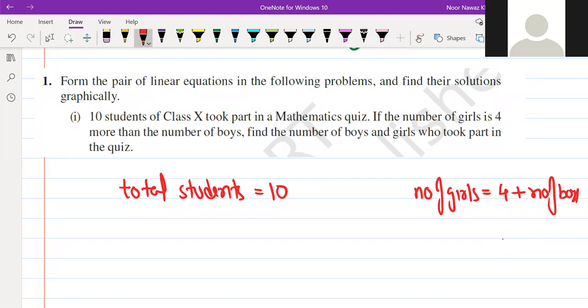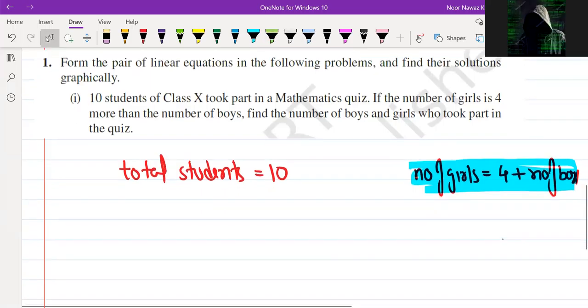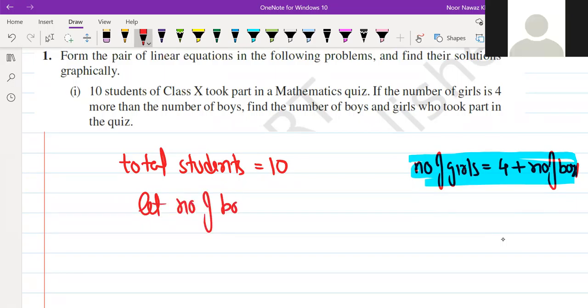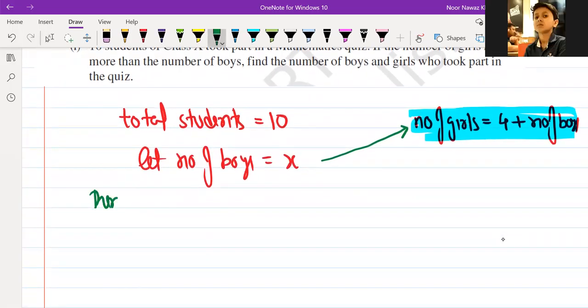This is the given. Number of girls is 4 more than number of boys. If someone gives us a sequence, what do you do? Consider the right side. Let number of boys be x. Can I write girls in boys terms? Then number of girls will be 4 plus x.